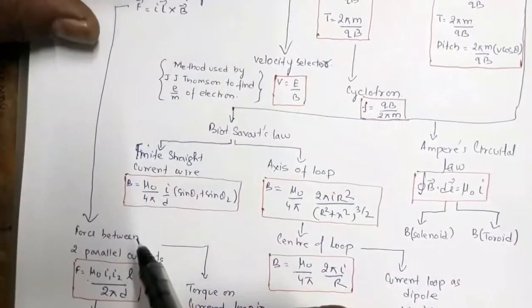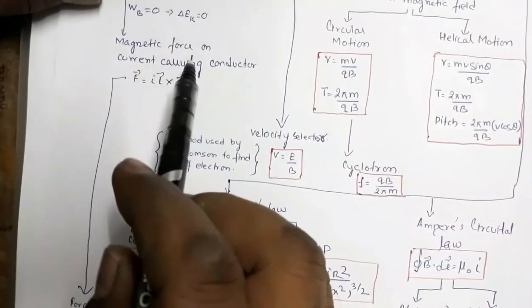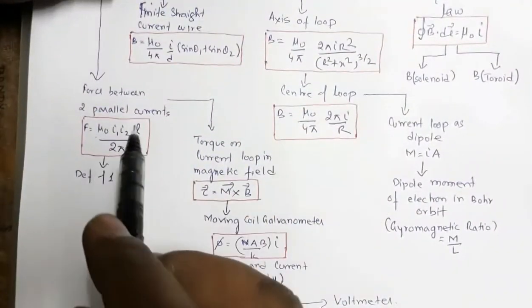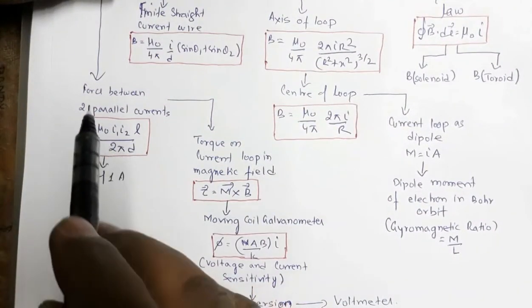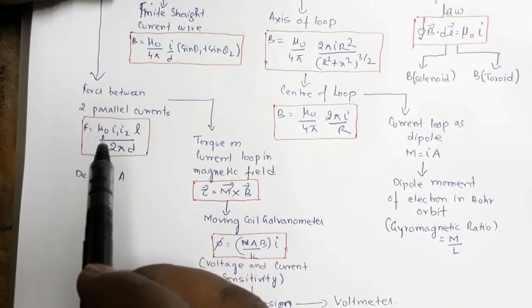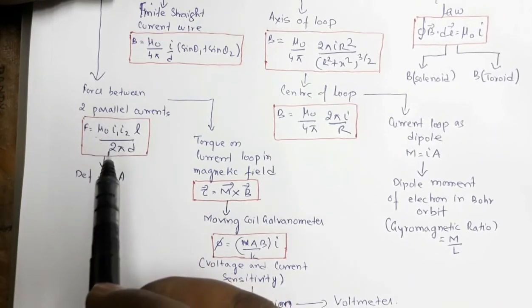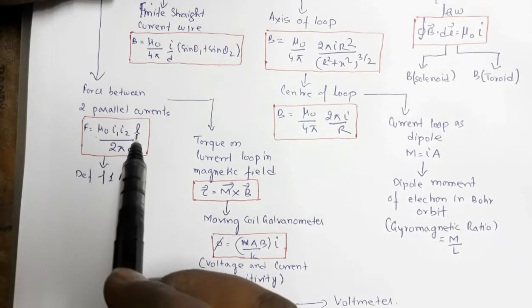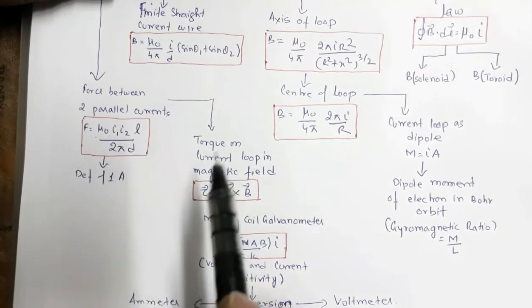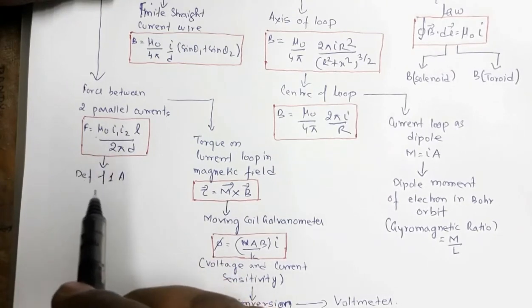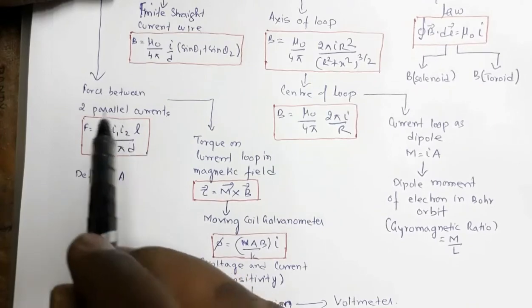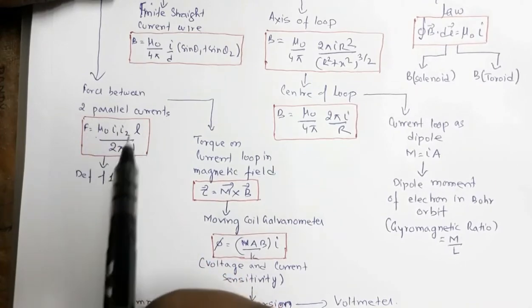From the magnetic force on a current-carrying conductor, we extend to the force between two parallel current-carrying conductors: F = μ₀i₁i₂l / 2πd, where d is the separation between the conductors and l is the length of the segment. From this expression, the definition of 1 ampere is also derived.